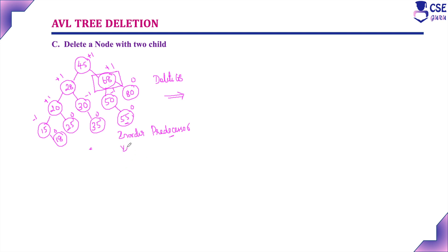Another case is the in-order successor, which is the smallest element in the right subtree. Here the right subtree has only one element, but if there are more elements, we can replace the smallest element in the right subtree in place of 68. First, I am replacing using the in-order predecessor — the largest element in the left subtree.